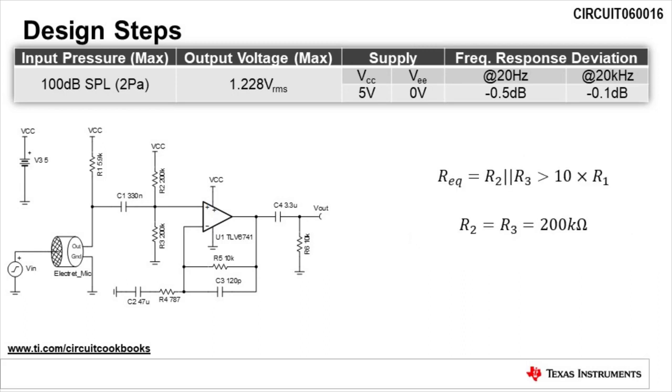Next we need to set the amplifier's input common mode voltage to mid-supply. This is done with the voltage divider created by R2 and R3. The equivalent resistance of R2 and R3, REQ, should be 10 times larger than R1, so a majority of the microphone's current flows through R1. We will select R2 and R3 to be 200 kilo ohms.